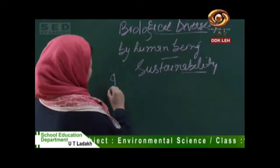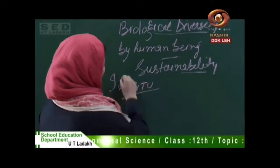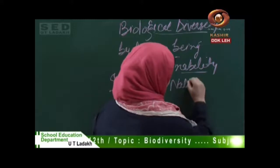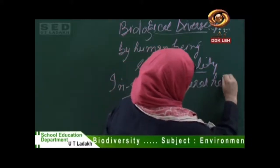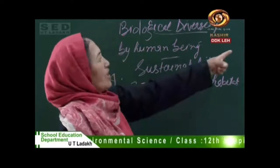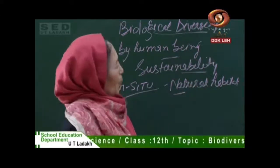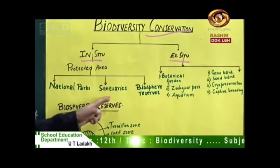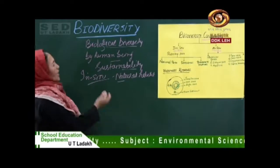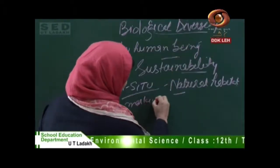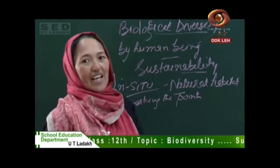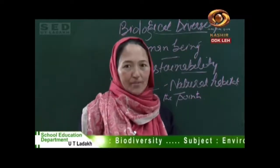In-situ conservation means conservation within the natural habitat. When conservation is done within the natural habitat, it is called in-situ conservation. Within in-situ conservation we can find national parks, sanctuaries, and biosphere reserves — natural habitats where areas are designated and marked for protection.